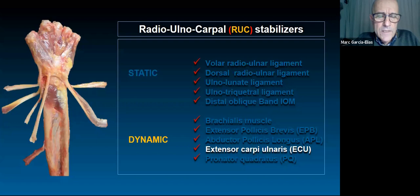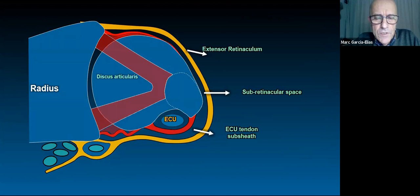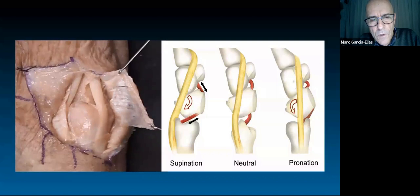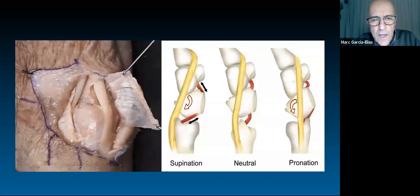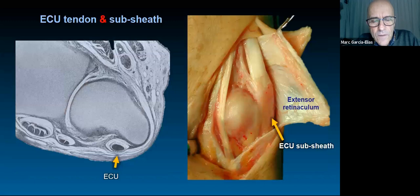The membrane that keeps the ECU tendon in its own sixth compartment has been regarded as a very important secondary stabilizer. The tendon is strongly attached to the ulna, and the two rotate together regardless of what the rest of the extensors do. The sheath at the level of the ulnar head is strongly attached to the ulna and yet independent of the extensor retinaculum — the tendon and its subsheath can be separated from the retinaculum.